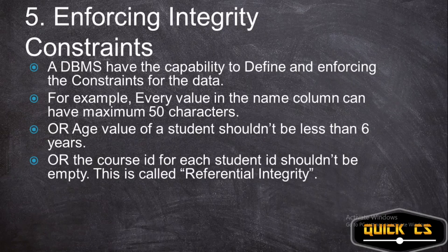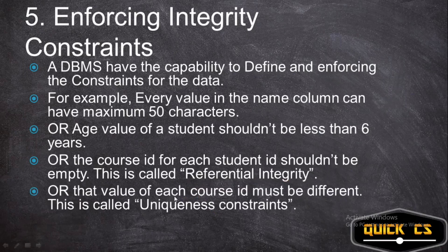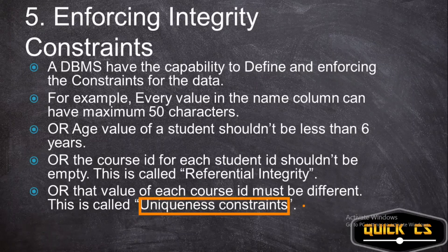Another example: for each student ID there should be a course ID. This is called referential integrity — you maintain a reference for each student ID with a course ID, because a student without a course ID isn't studying anything, which questions the integrity of the database. Another example of an integrity constraint is that the value of each course ID must be different — this is called a uniqueness constraint.